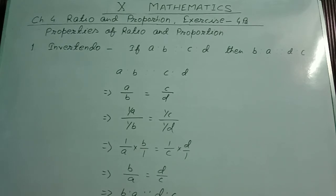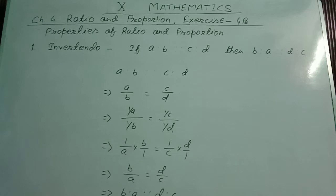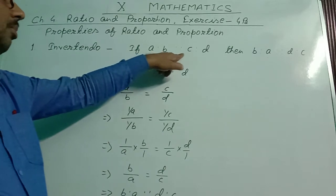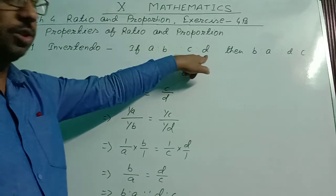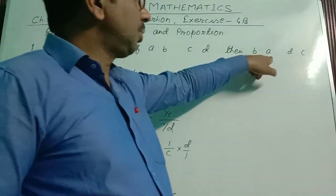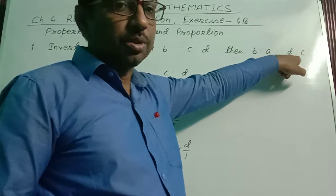Now we come to the properties of ratio and proportion. There are several properties: invertendo property, alternendo property, componendo property, dividendo property, convertendo property, componendo-dividendo property, and lastly, equivalent ratio property.